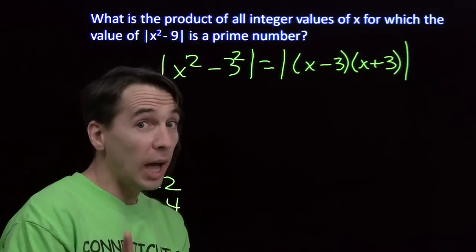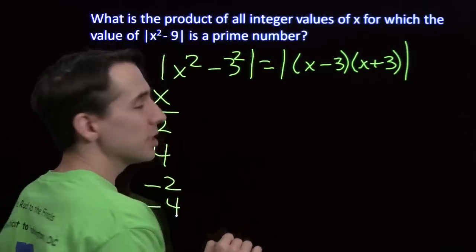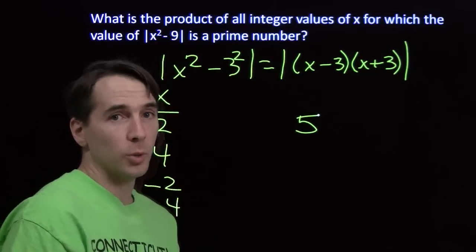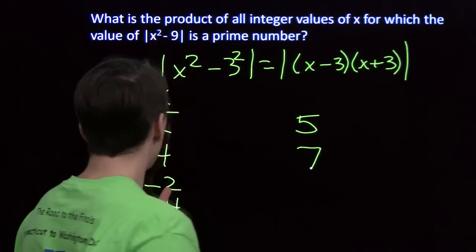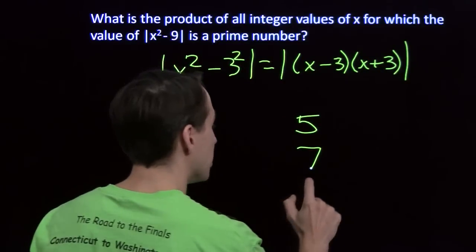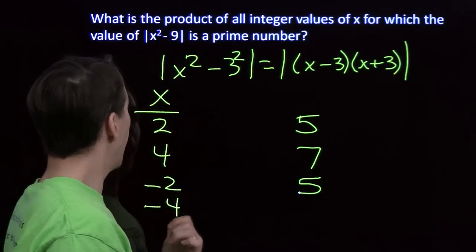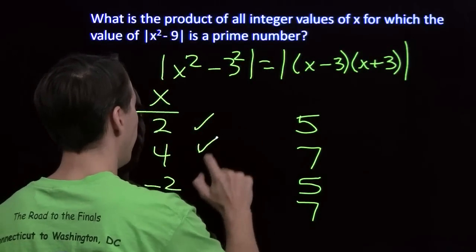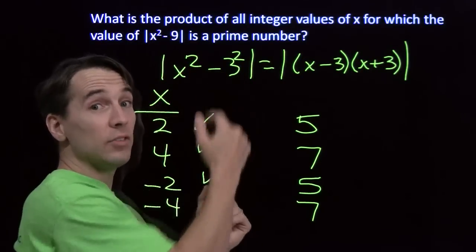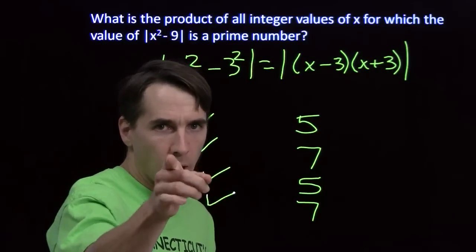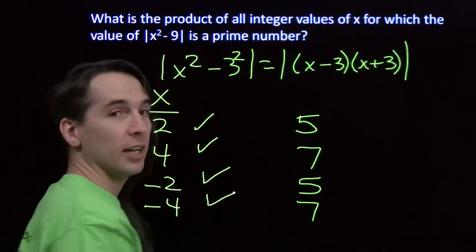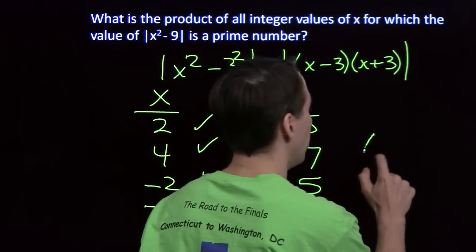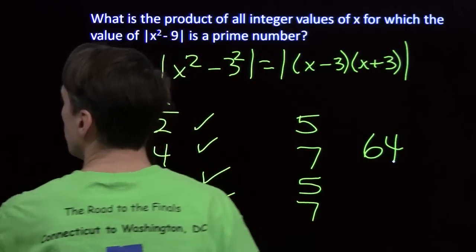Here are the possible values of x — we still have to test them. x equals 2: 2 squared minus 9 is negative 5, absolute value is 5 — prime. x equals 4: 4 squared is 16, minus 9 gives 7 — prime. x equals negative 2: negative 2 squared is 4, minus 9 is negative 5, absolute value is 5 — prime. x equals negative 4: 16 minus 9 is 7 — prime. All four values of x work. The problem asks for the product of the values: 2 times 4 is 8, negative 2 times negative 4 is also 8. Multiply those two 8s and we get 64.